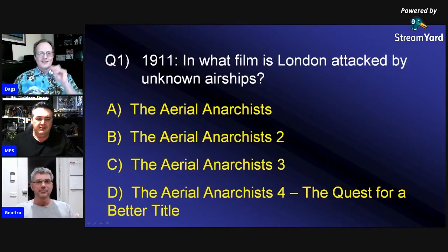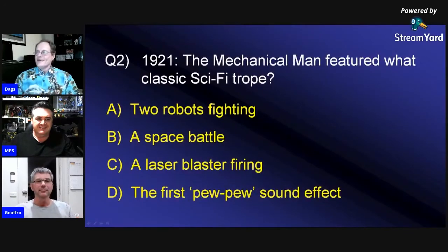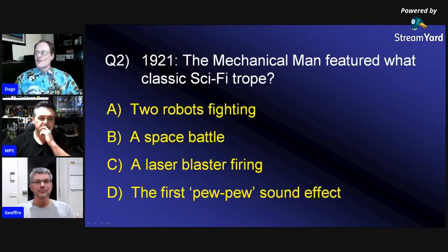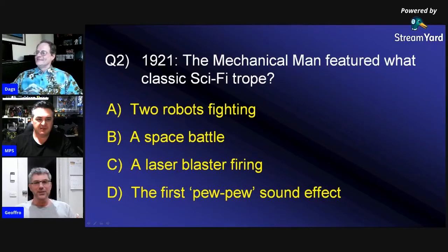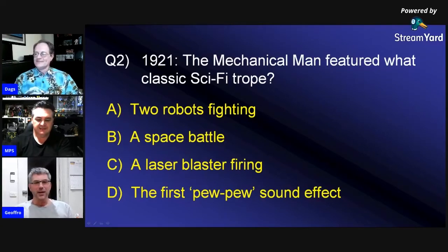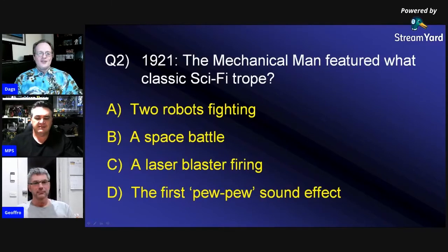We move along to 1921. The Mechanical Man featured what classic sci-fi trope? Was it A, two robots fighting; B, a space battle; C, a laser blaster firing; or D, the first pew-pew sound effect? I would almost say A, but I'd tend to go C. What do you reckon, dude? Yeah, I reckon C. Believe it or not, it was the only movie made this year, and it came from Italy of all places.